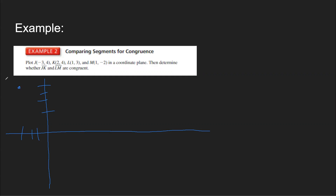Negative 3 comma 4 — that's J. And then K at 2 comma 4. L at 1 comma 3, and then M at 1 comma negative 2.